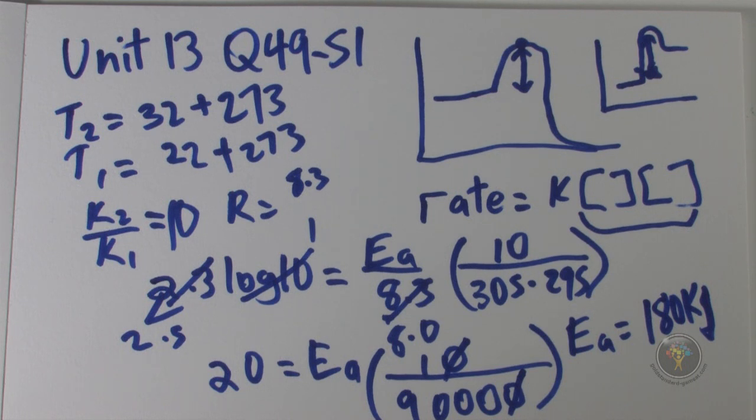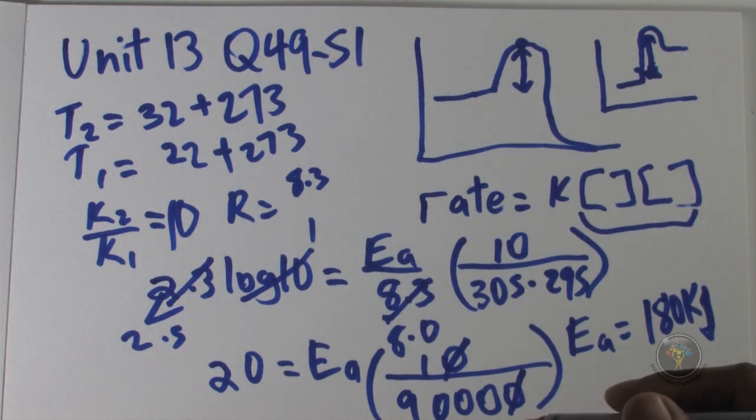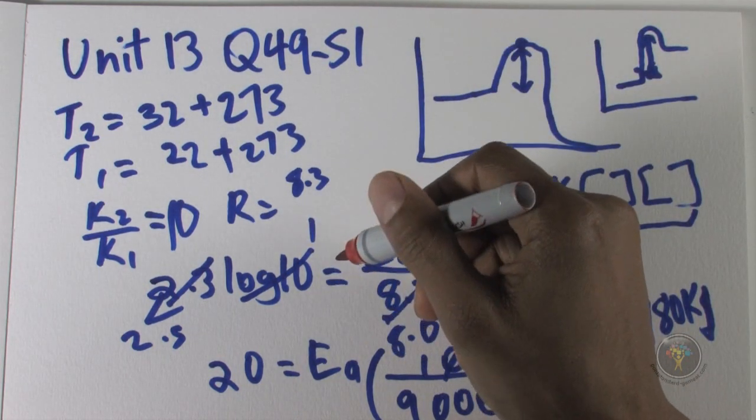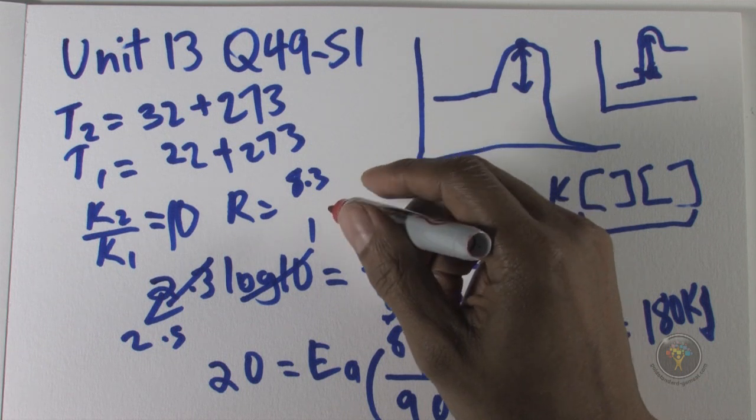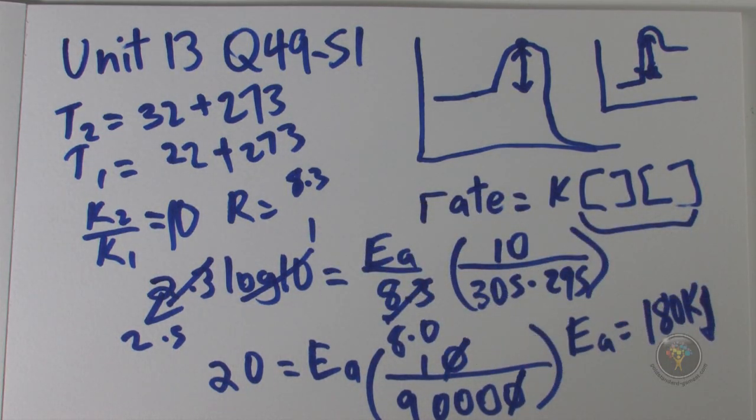Now 51. Assume the rate of reaction increases by a factor of 10 when the temperature increased by 3 degrees. For a larger temperature increase from the same initial temperature, the rate of the same reaction is found to increase by 100. Which of the following temperature increases would most likely explain this? Let's look at the original equation.